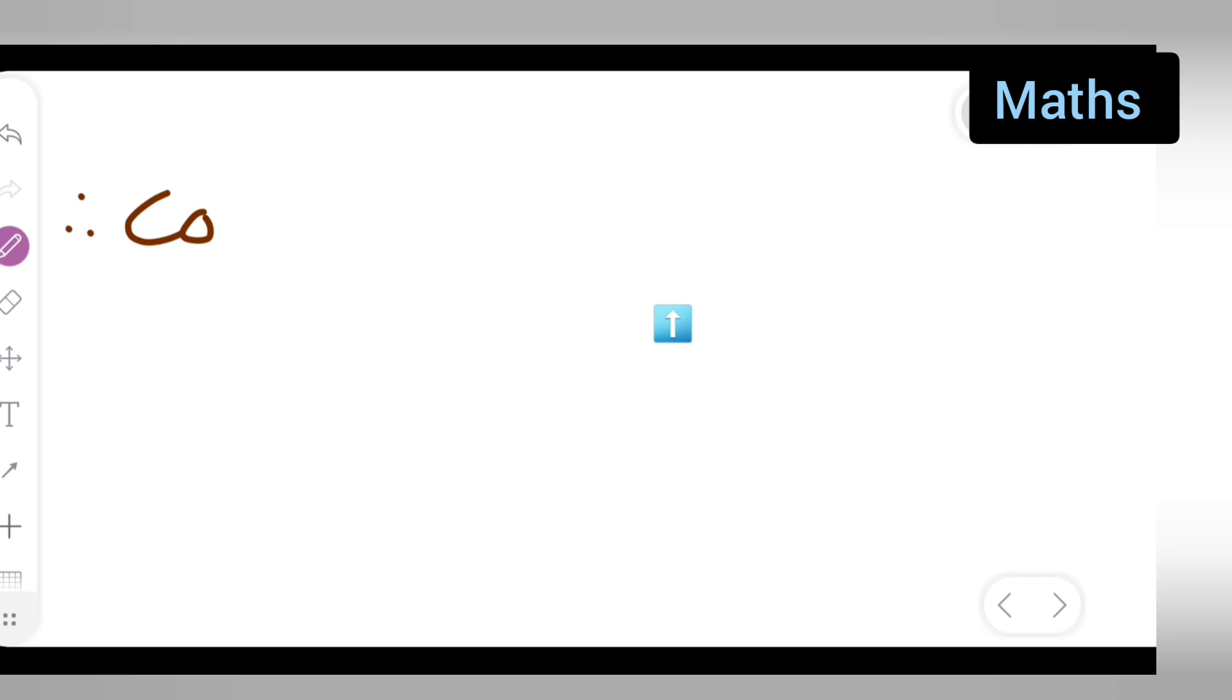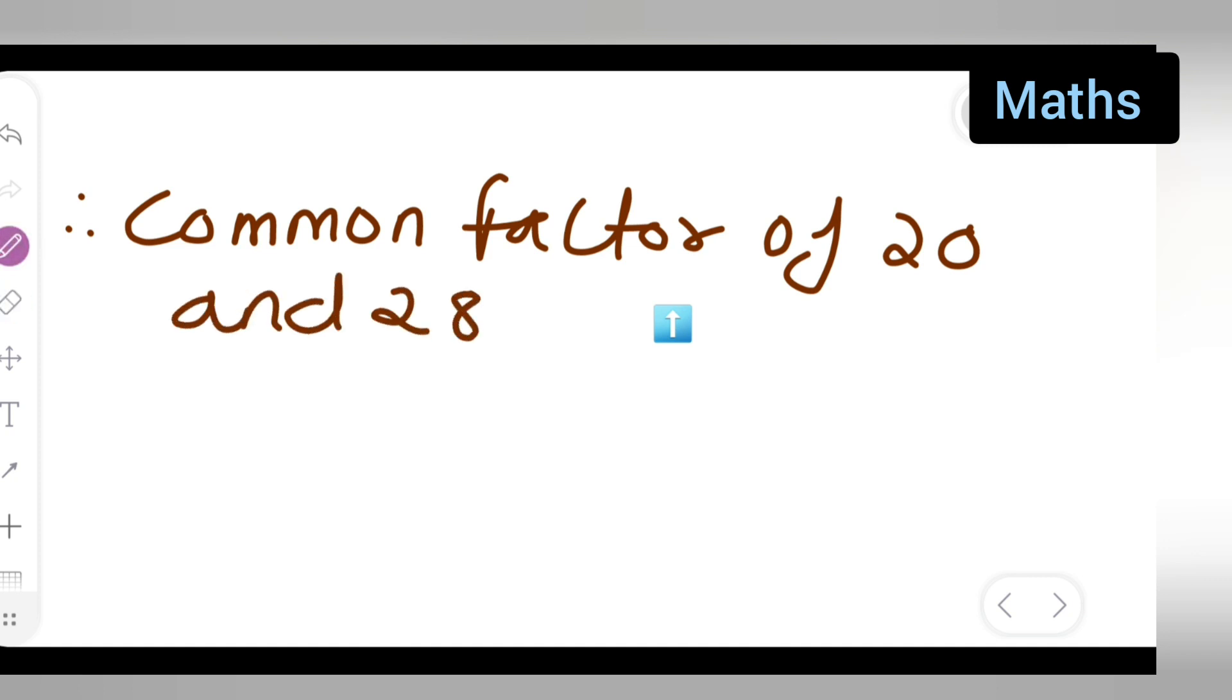Therefore, you can say the common factor of 20 and 28 are 1 comma 2 and 4. So these are the common factors.